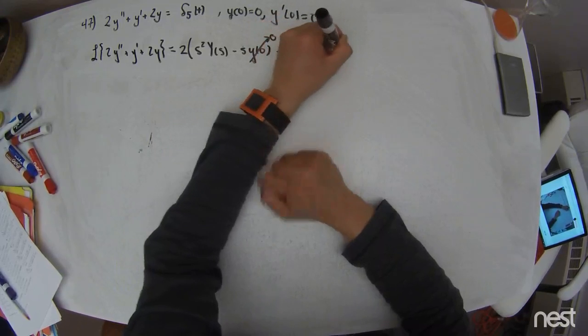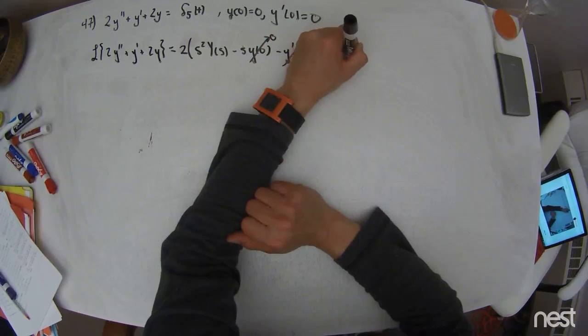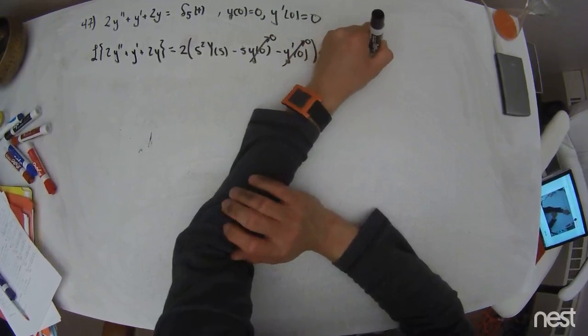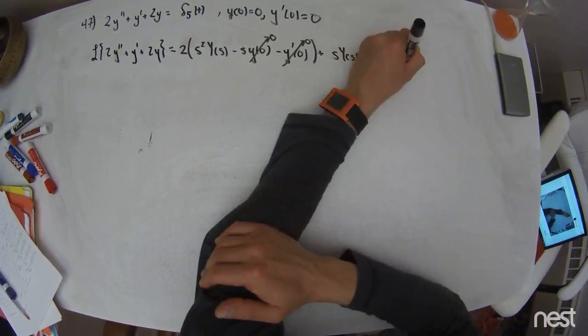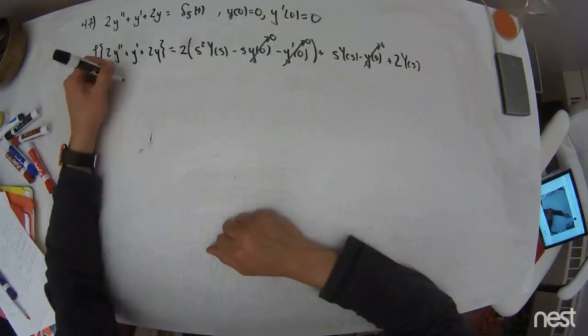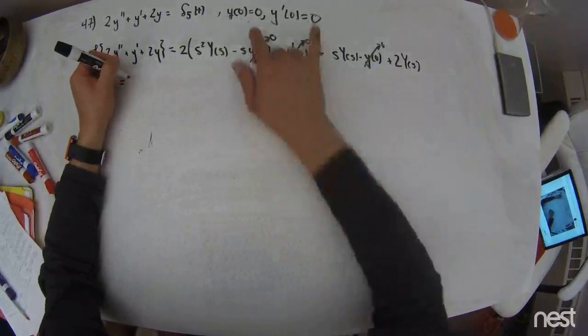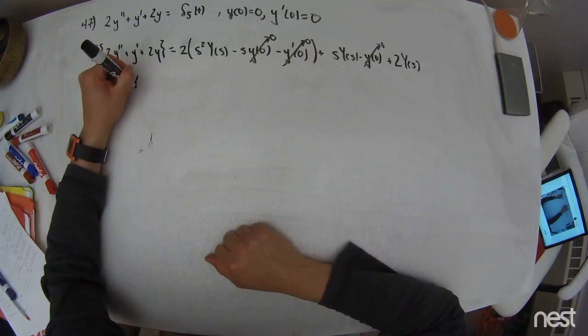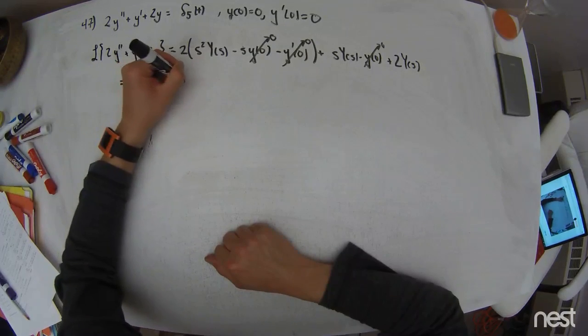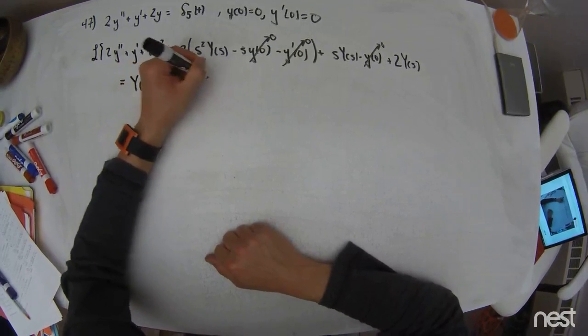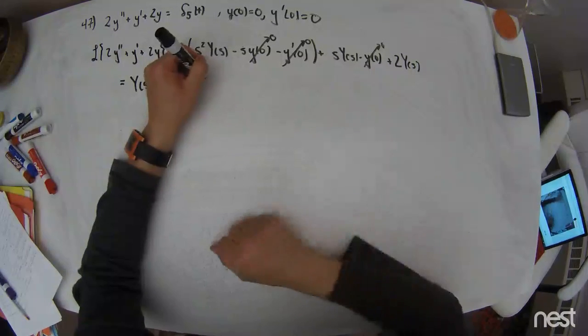I'll add this to s times capital Y of s minus y of 0, which I know to be 0, and I'll add this to 2 times capital Y of s. So on the left-hand side, as is the case when I have 0-valued initial conditions, Y of s multiplies the characteristic polynomial 2s squared plus s plus 2.